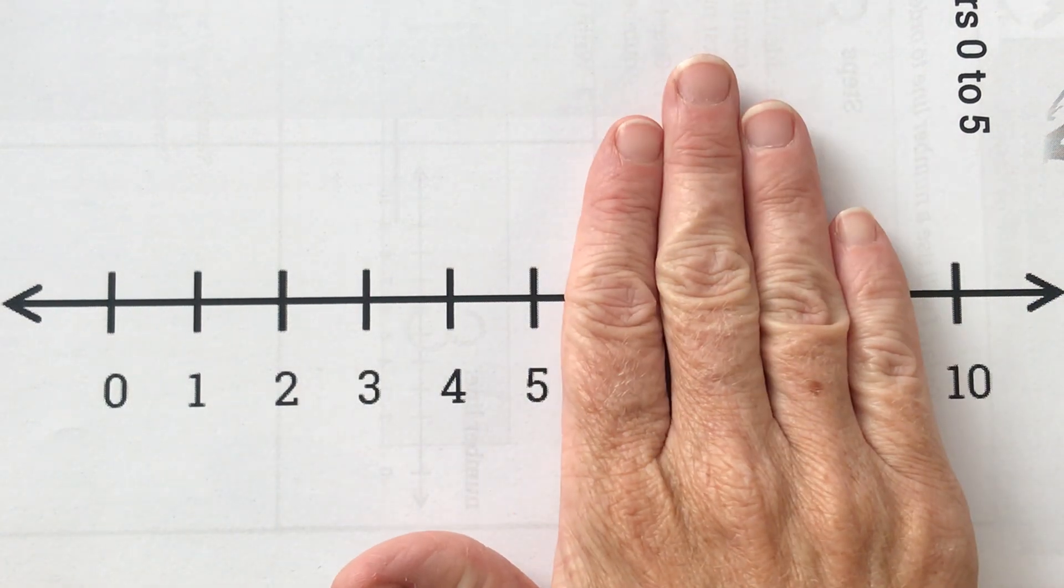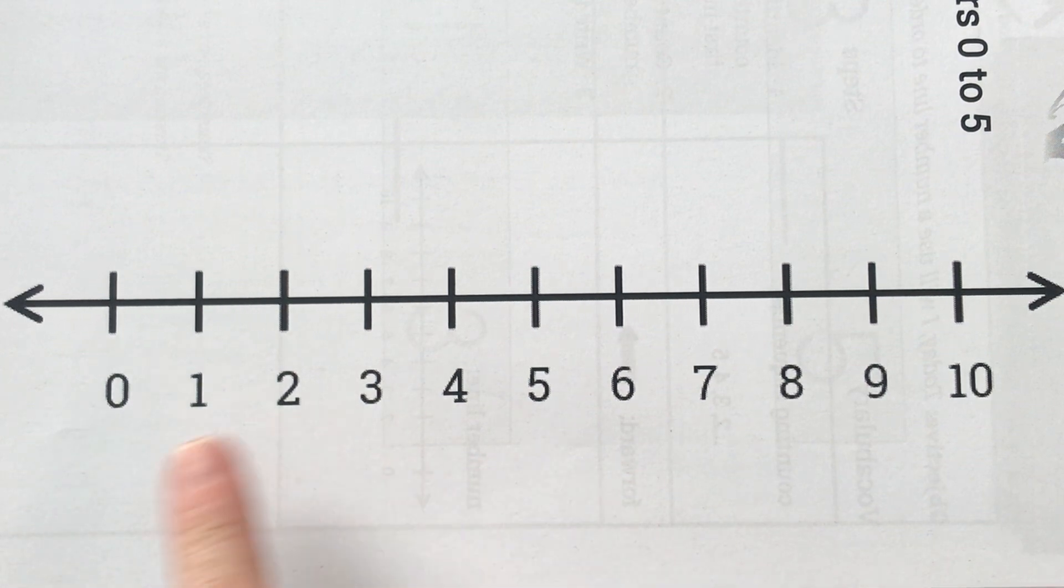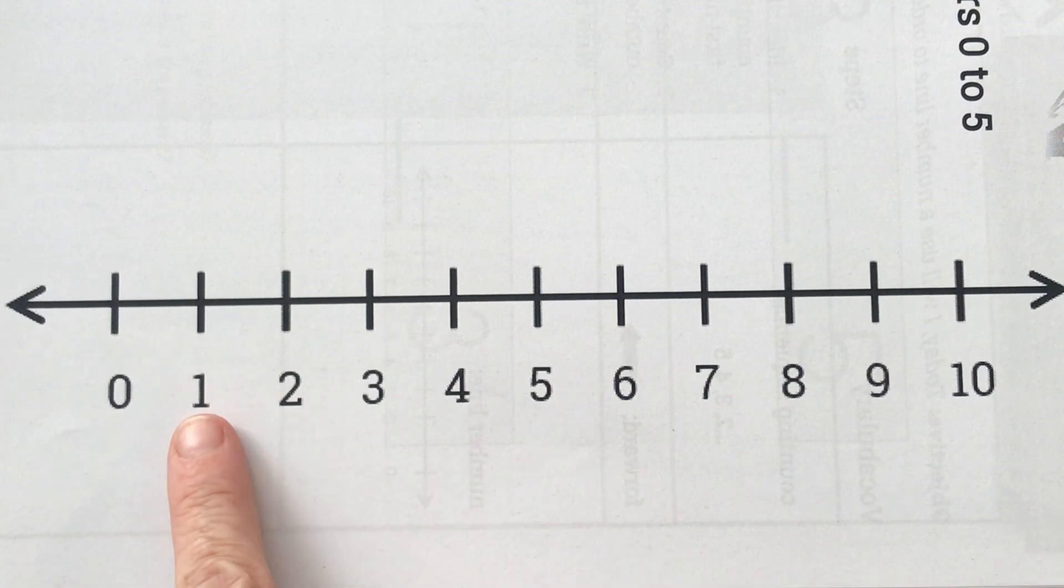This is how far we've gone, to five. This is our number line in order. You can use this page, page 47, to help you today if you need it because our numbers are in order here: zero, one, two, three, four, and five.